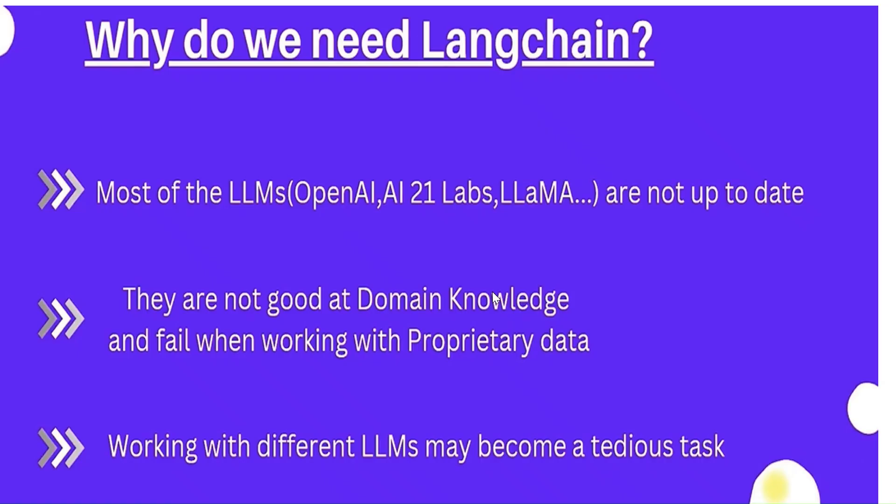Why do we need LangChain? Most LLMs — like those from OpenAI — there are many LLMs available, such as A21 Labs, Bard from Google, and others. But many of them are not up to date. For example, if an incident happens now and you ask an LLM about it, it won't be able to answer correctly.